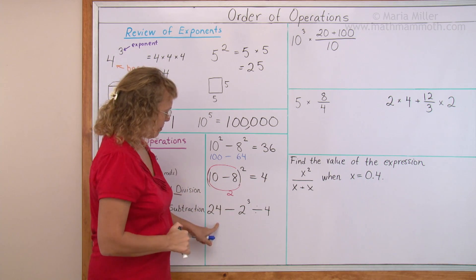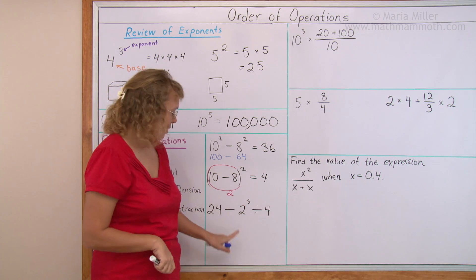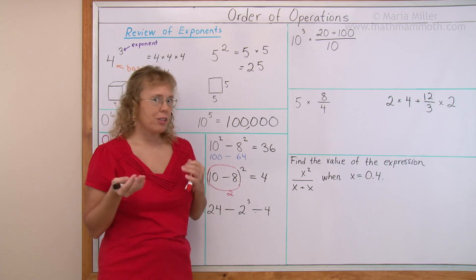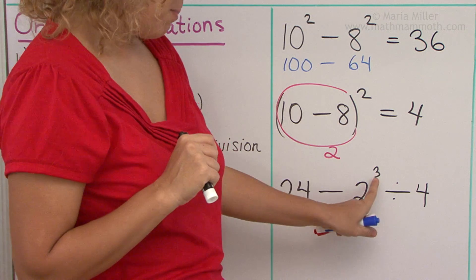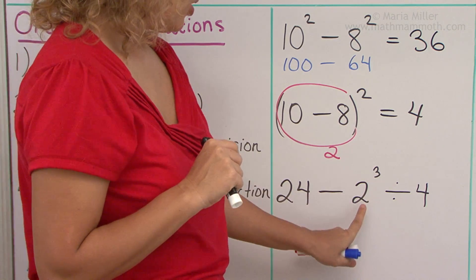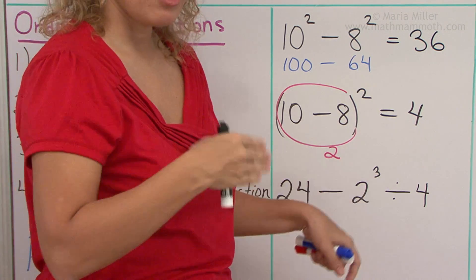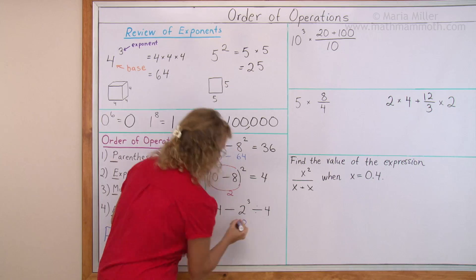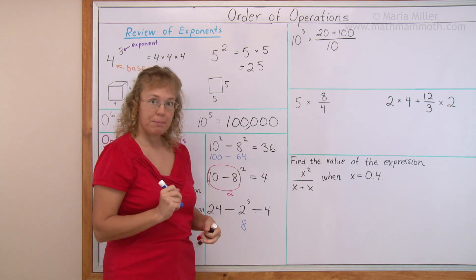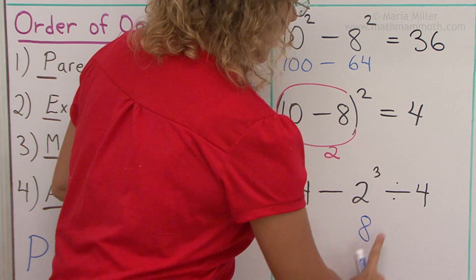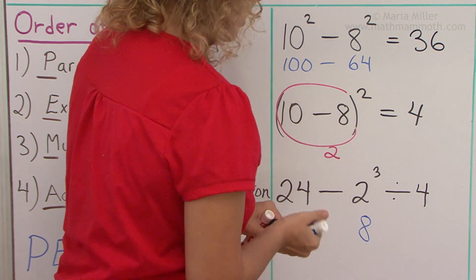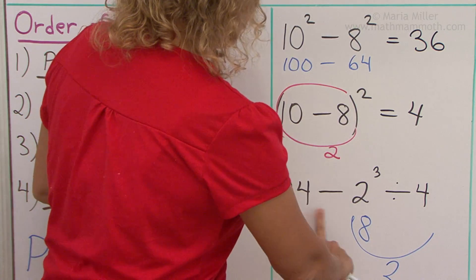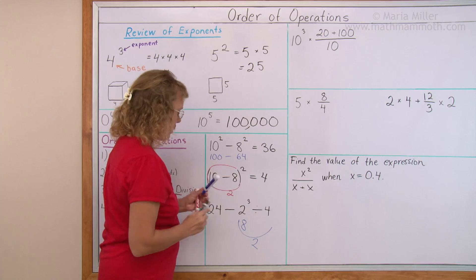How about this one? Now there is subtraction, an exponent, and division — so which one do we do first? It's the exponent again. 2 cubed is 2 times 2 times 2, which is 8. Then what's next? Division — 8 divided by 4 gives us 2. So this whole part equals 2. And then lastly, 24 minus 2, so we get 22.